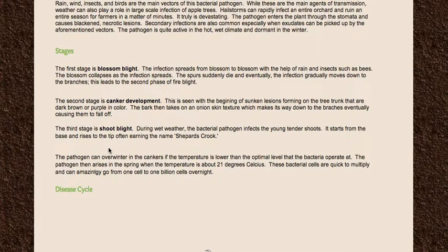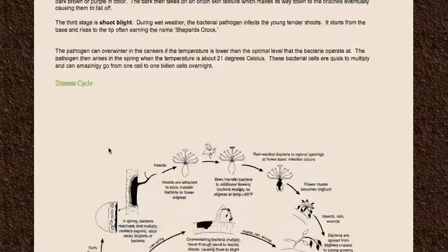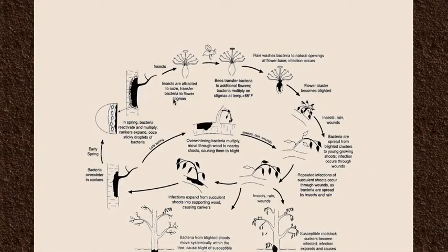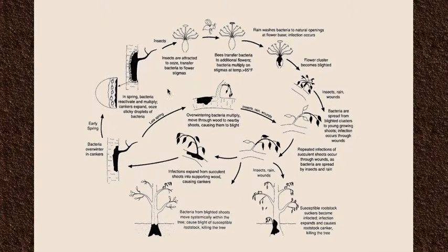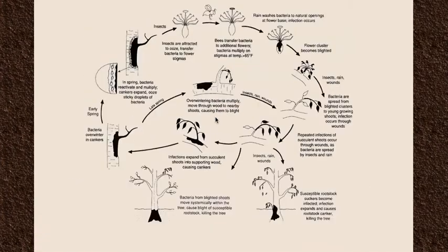As mentioned before, the pathogen can overwinter in cankers. Once the temperature is hot enough again — about 21 degrees Celsius, or 70 degrees Fahrenheit — the pathogen can come out, multiply, and spread to other plants in the area. You can see here the disease cycle. I could have made this on my own, but since it was already well-made, I didn't want to recreate something already perfectly done. You can see there's a secondary cycle, which means the disease is polycyclic — several disease cycles can occur in one season.